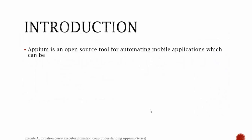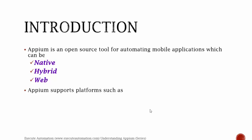Appium is an open source tool for automating mobile applications, which can be a native mobile application, a hybrid mobile application, or a web-based mobile application. Appium supports all these three different kinds of mobile application technologies, as well as platforms such as Android, iOS, and Firefox operating system.